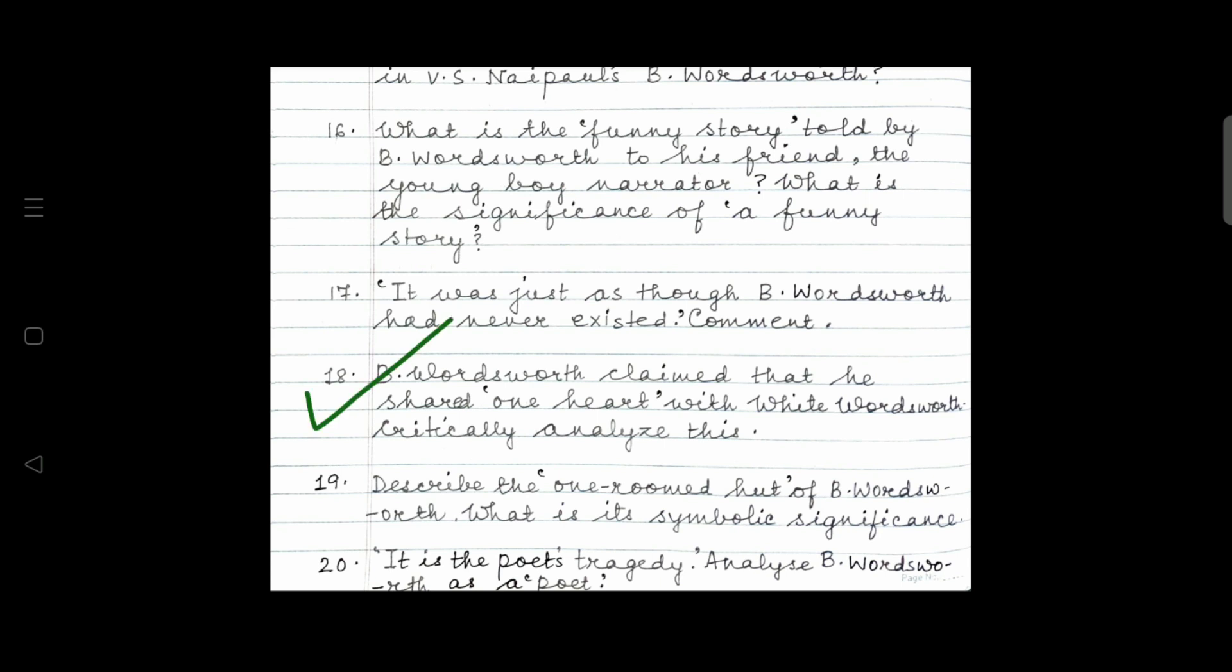Question eighteen. B. Wordsworth claimed that he shared one heart with White Wordsworth. Critically analyze this. I will soon upload this video on request. You will check the description box for the answer. This is yet to be uploaded, but work is in progress. So, keep checking, tap the bell icon and keep checking the notification. The next question. Describe the one-roomed hut of B. Wordsworth. What is its symbolic significance? What is the symbolic significance of the hut? Try to watch the video on symbolism. You will get an idea once again as to how to write this answer. Describe the hut. Describe the surrounding. And what role does this hut play in the life of the boy narrator? These key points must be there in your answer.